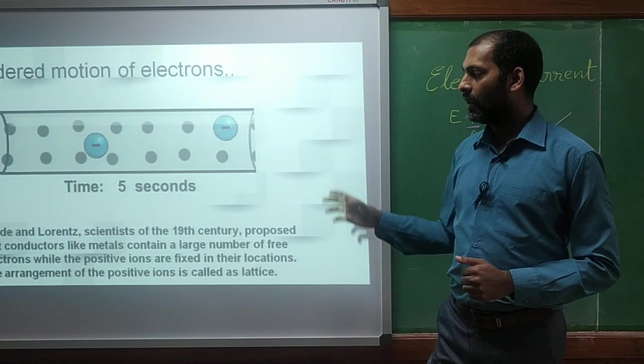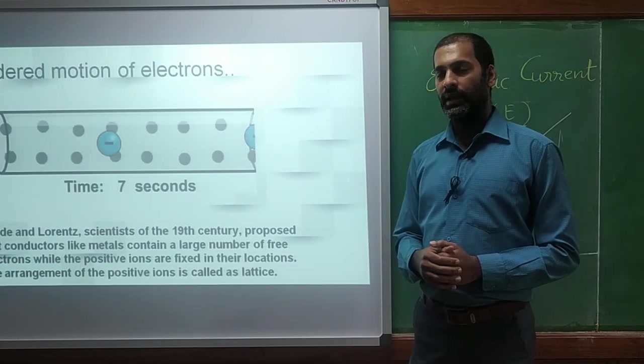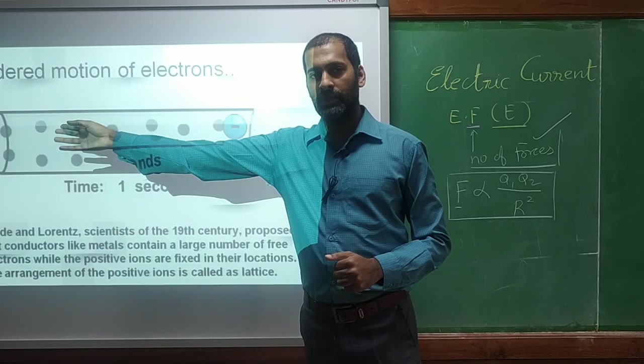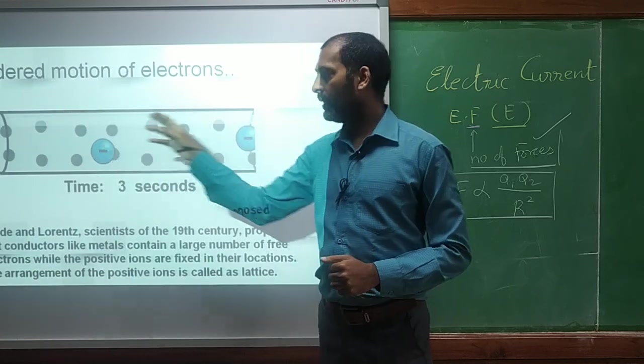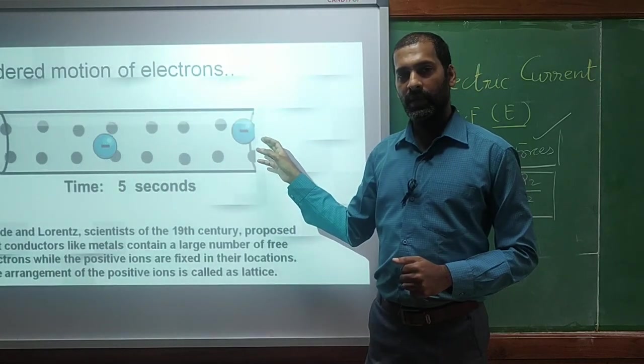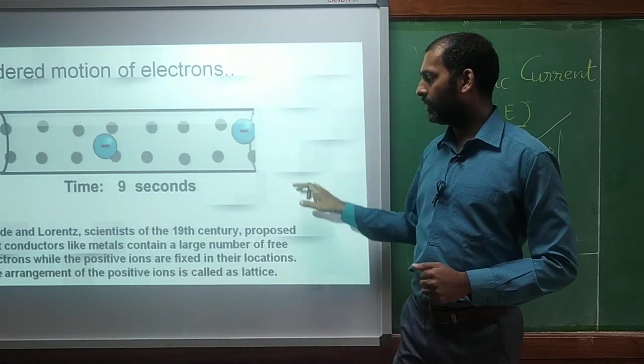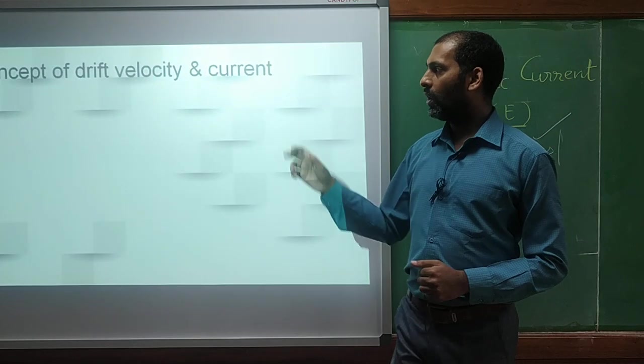And if it is a supply voltage, then what will happen? There will be ordered motion of electrons. If we connect one place with positive charge, positive terminal of battery, another end with negative terminal, then we get the movement of electrons across that particular lattice. So that is ordered thing.